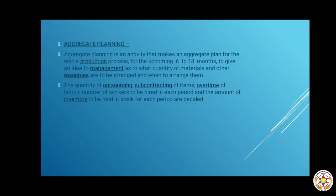The quantity of outsourcing, sub-contracting of items, overtime of workers, number of workers, and amount of inventory to be held in stock for each period are all decided in aggregate planning. Outsourcing means giving your work to another company. Sub-contracting means asking another company to manufacture certain items and transport them to you. Overtime calculations for labor are also included. All these things will be part of the aggregate plan.